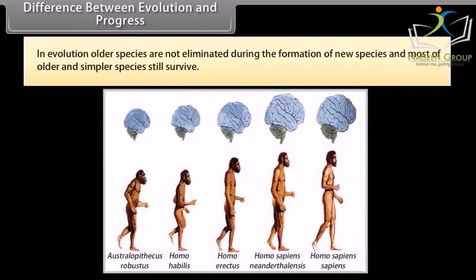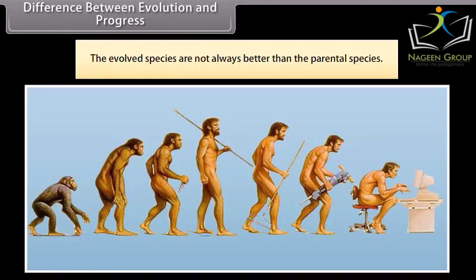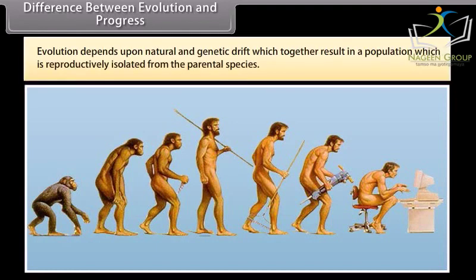In evolution, older species are not eliminated during the formation of new species and most older and simpler species still survive. The evolved species are not always better than the parental species. Evolution depends upon natural selection and genetic drift, which together result in a population that is reproductively isolated from the parental species.